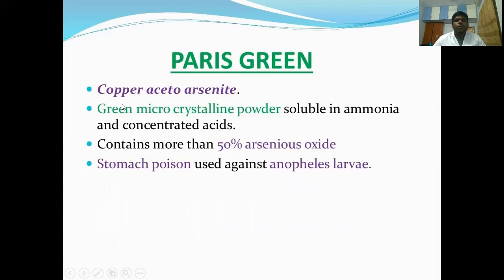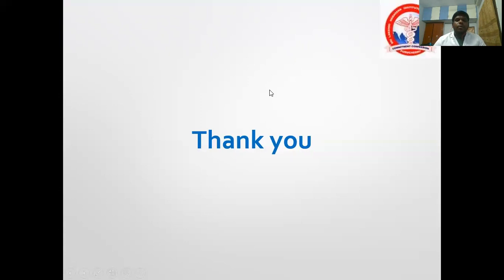Mineral oils such as kerosene and crude oil are used against larvae — they form a thin membrane on the water surface so larvae cannot take oxygen from the atmosphere and die. Paris green (copper acetoarsenite) is a green microcrystalline powder, soluble in ammonia and concentrated acids, containing 50% arsenic oxide; it is a stomach poison used against Anopheles larvae.